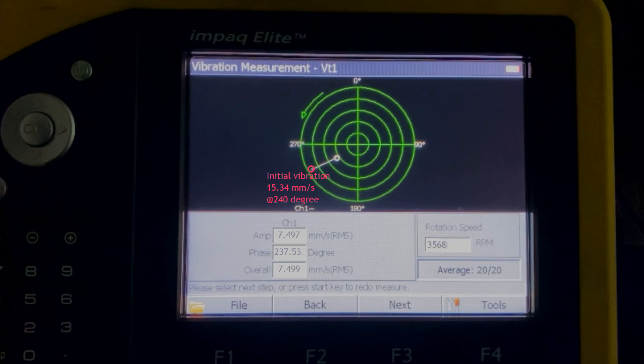We can observe from the polar plot that the vibration trend is moving towards the center of the plot. That's what you want it to do. It proves that our heavy spot estimation works perfectly for this demonstration. Although we can continue to complete the balancing job, we are going to stop here.